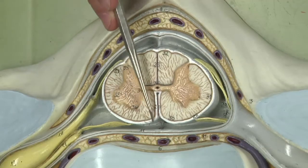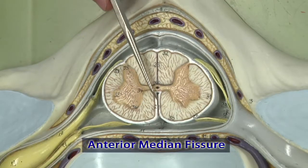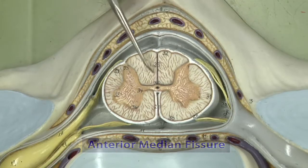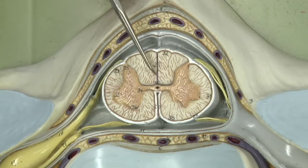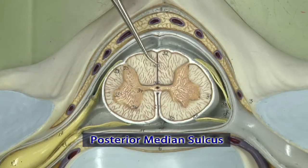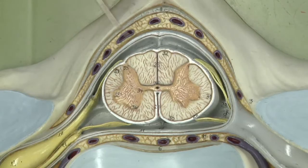You can also see a couple of slits here. This one is referred to as the anterior median fissure, and this one is the posterior median sulcus. They are basically a result of embryonic development.